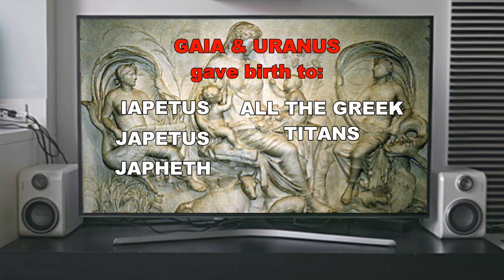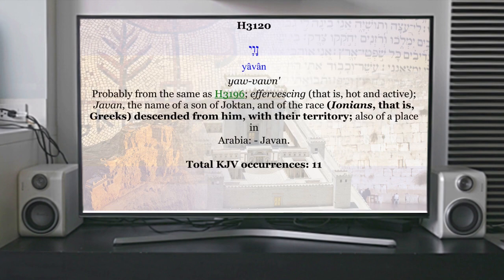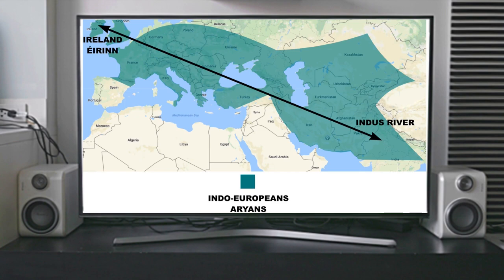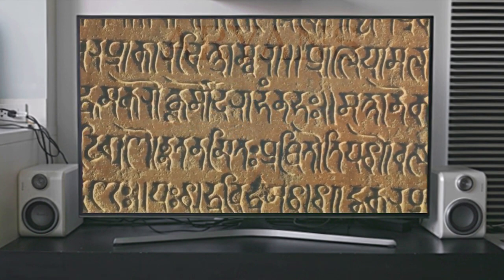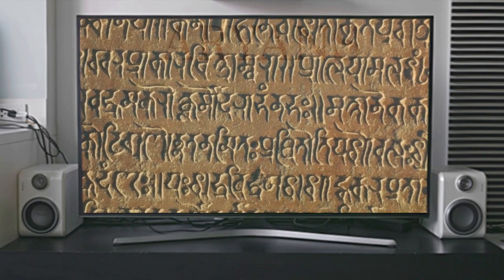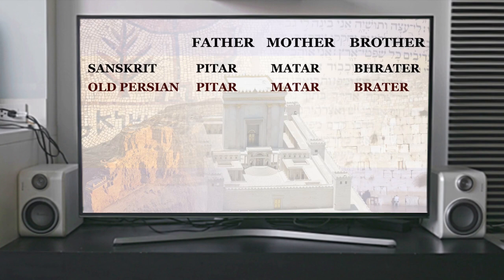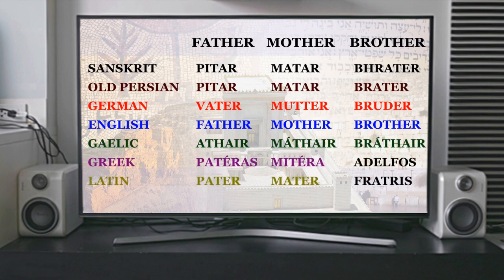Japheth is one of the fathers of the Greeks. The Bible calls the Greeks Javon, who was the son of Japheth. If you go to your Bible concordance you will see that under Javon it says 'Ionian Greek.' When we look at language from India to Ireland we see connections just through the words. In Sanskrit, which is Old Indo-Aryan and the base for the Indian language today, we see similarities when we compare it with Old Persian, Latin, Greek, and even Gaelic. From Sanskrit to Old Persian it's almost identical — look at the words father, mother, and brother. Even when we compare it to German, English, Gaelic, Greek, and Latin, we can see the Aryan roots.